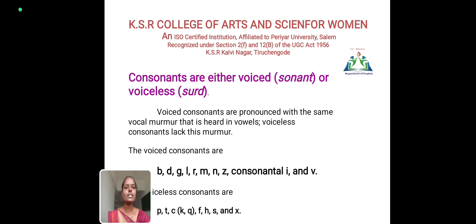Consonants are either voiced or voiceless. Voiced consonants are pronounced with the same vocal murmur that is heard in vowels. Voiceless consonants lack this murmur. The voiced consonants are B, D, G, L, R, M, N, Z, and also L, I, and V.